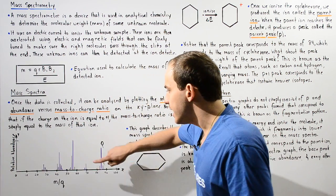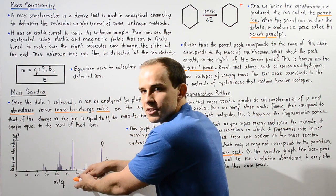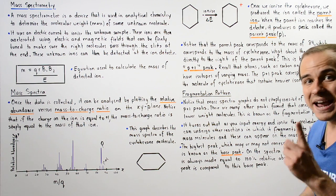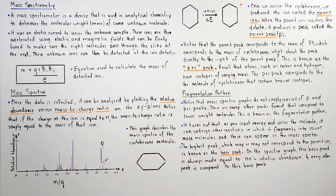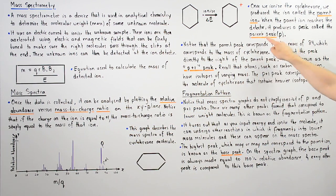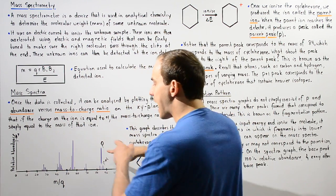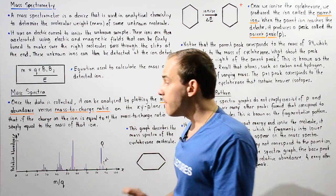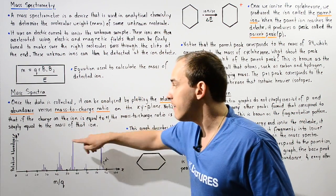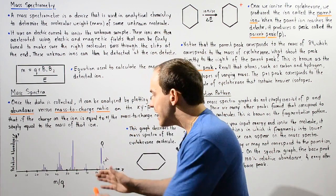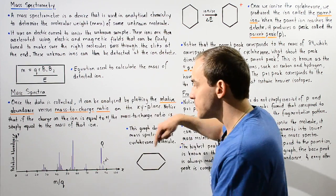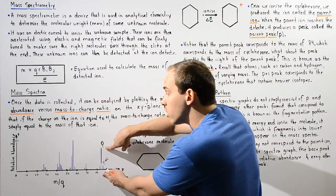Examining the entire spectrum, we find that there is one peak that is the highest, called the base peak. The base peak is the highest peak in the spectrum and may or may not correspond to the parent ion. In this particular case, the base peak is not the parent peak. The base peak is assigned a relative abundance of 100%, and all other peaks are expressed relative to it — so any peak shorter than the base peak will have a relative abundance less than 100%.